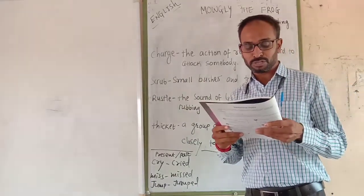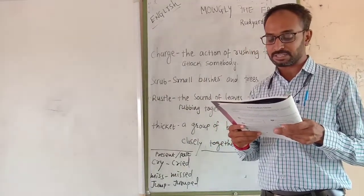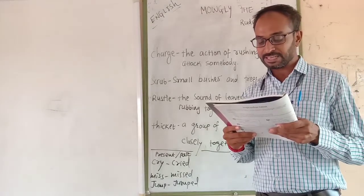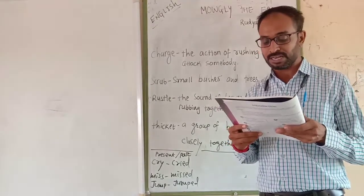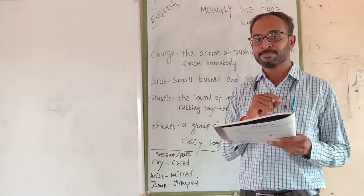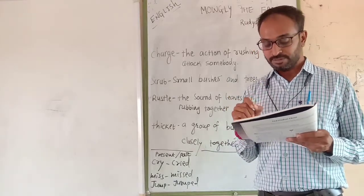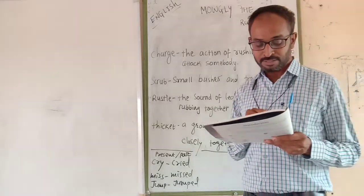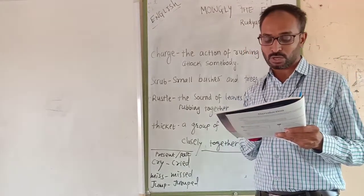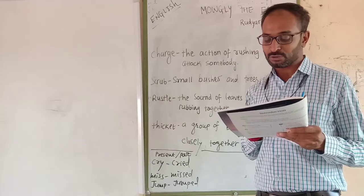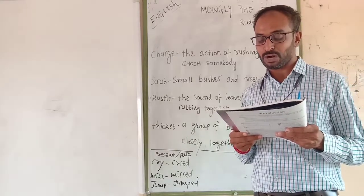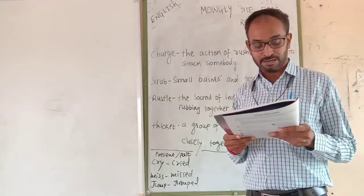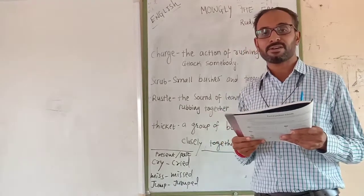He leaped before he saw what it was he was jumping at. Then he tried to stop himself. Here one word tried - it is a past tense word here, tried. The result was that he shot up straight into the air for four or five feet.